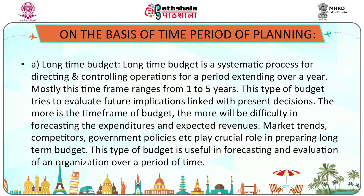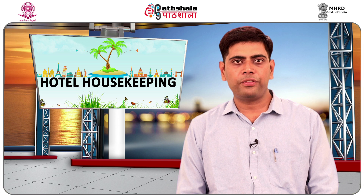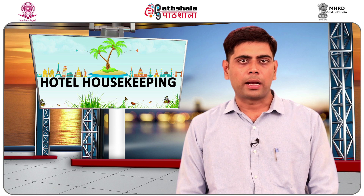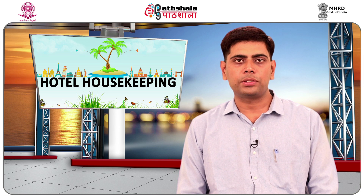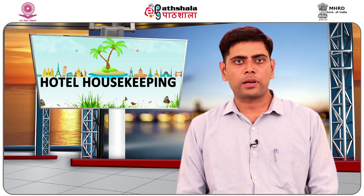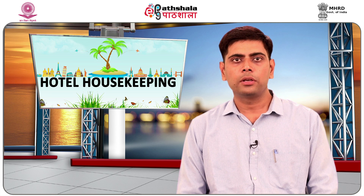On the basis of time period of planning, there are different types. A long-term budget is a systematic process for directing and controlling operations over a period extending beyond one year, typically ranging from 1 to 5 years. It evaluates future implications linked with present decisions, and the longer the timeframe, the more difficult it is to forecast expenditures and expected revenues. Market trends, competitors, and government policies play a crucial role in preparing long-term budgets.